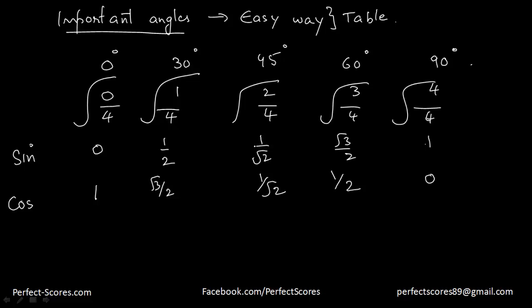We're going to understand the reason behind this in future videos. Right now let's just understand how the table is formed. The tangent of x is the division of sine x over cos x. So 0 over 1 is 0, this over this is 1 by root 3, this over this is 1, this over this is root 3, and 1 over 0 is not defined.